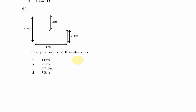Moving down to question 52 — they want us to find the perimeter of this shape. To find the perimeter we need to add up all the sides. However, two sides are missing: we don't know the length of this side here, nor the length of this other side. We need to ascertain the values of both these sides before we can calculate the perimeter.